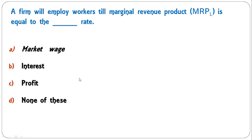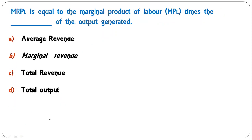A firm will employ workers till Marginal Revenue Product of Labor (MRPL) is equal to the dash rate — market rate, interest rate, profit rate, or none of the above? The correct answer is market wage rate. The firm will employ workers up to the point where MRPL equalizes with the market wage rate.